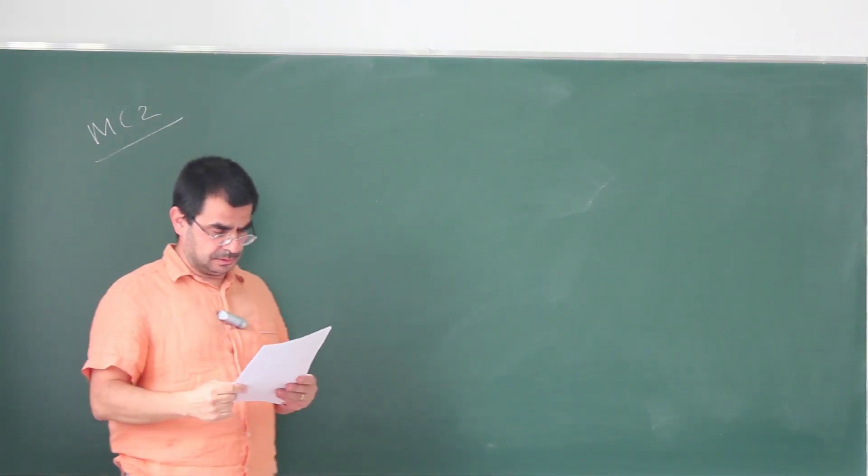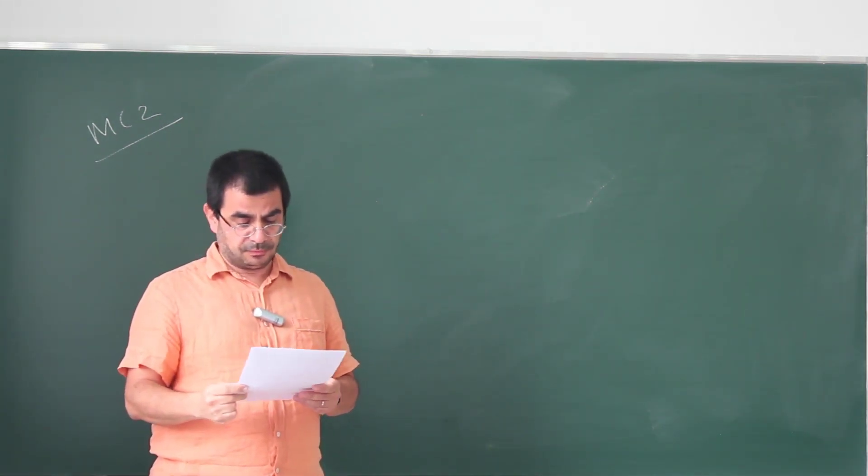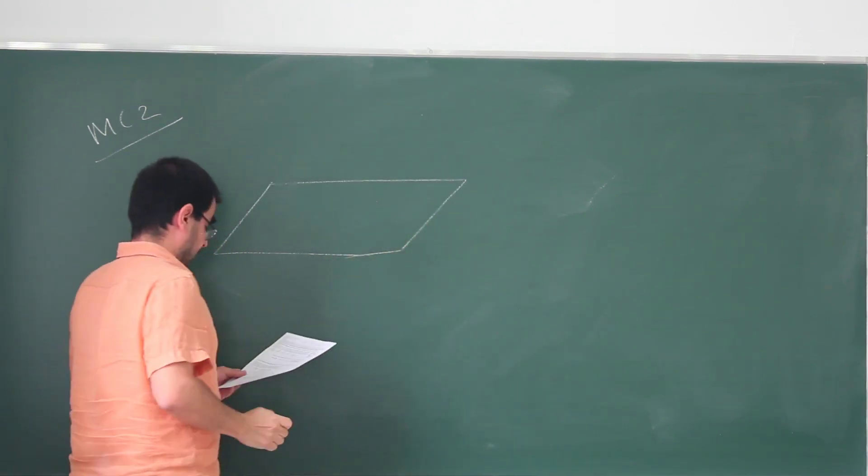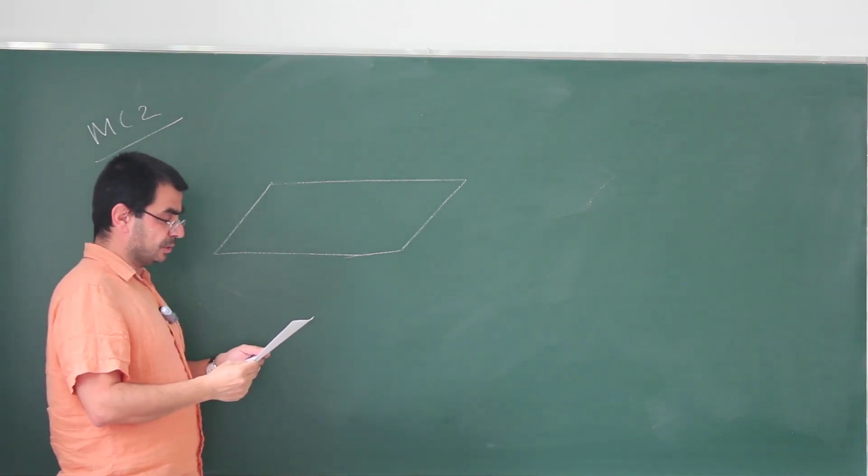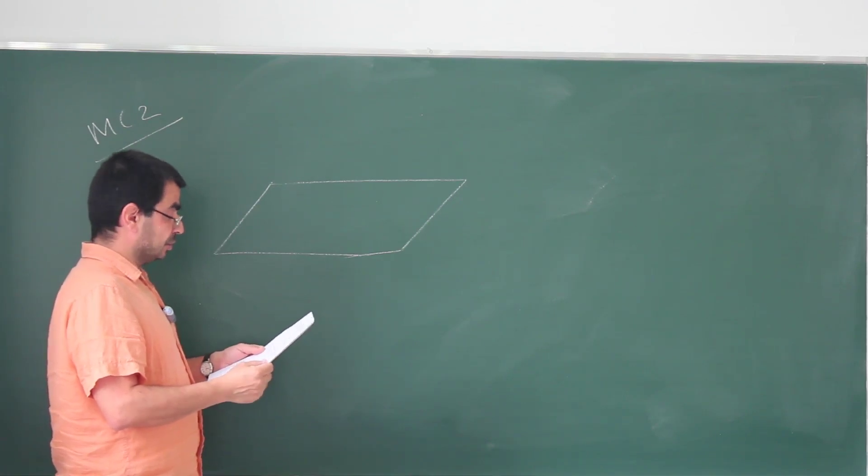Now for the second multiple choice problem of the same exam, we have an infinite plate. A particle of mass M and charge Q is observed to stay motionless above a horizontal, very large, uniformly charged plate made of a thin insulator, as shown in the figure.